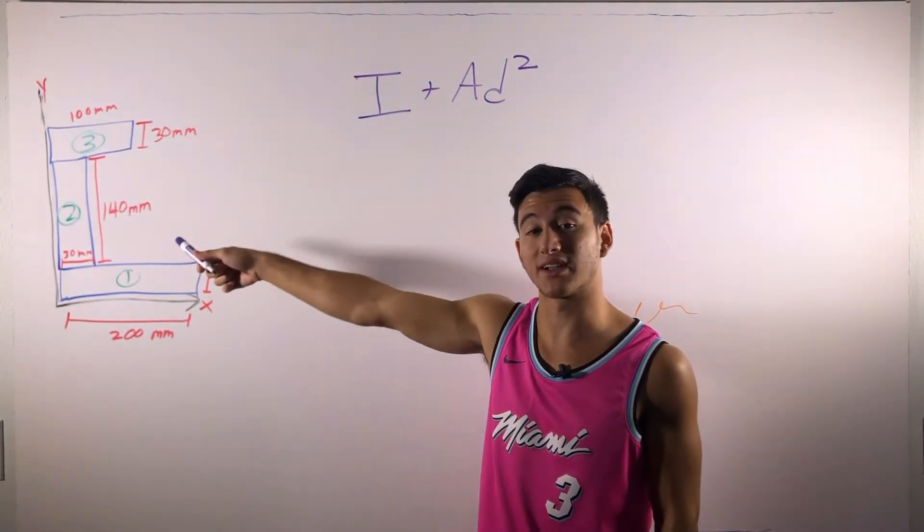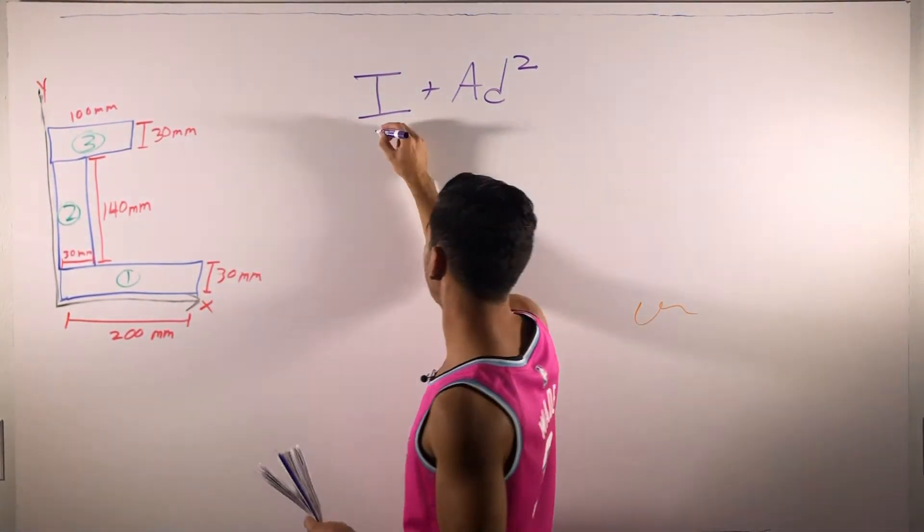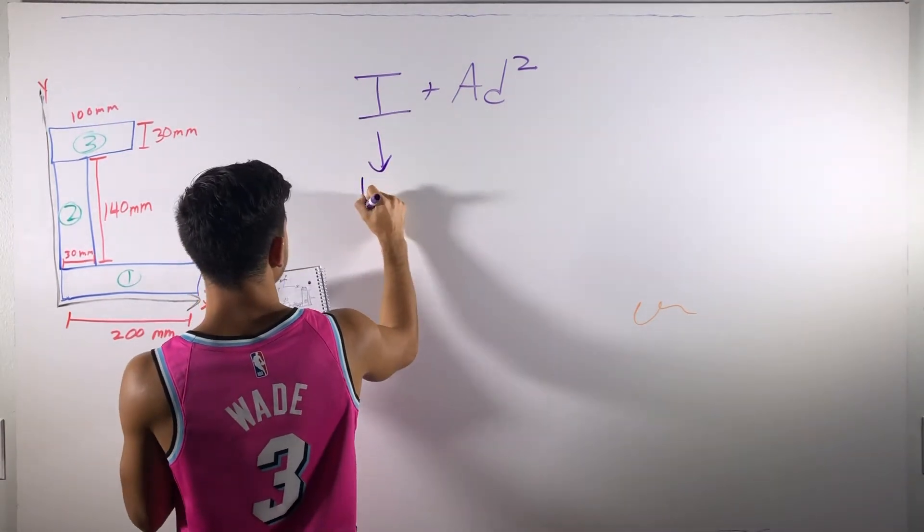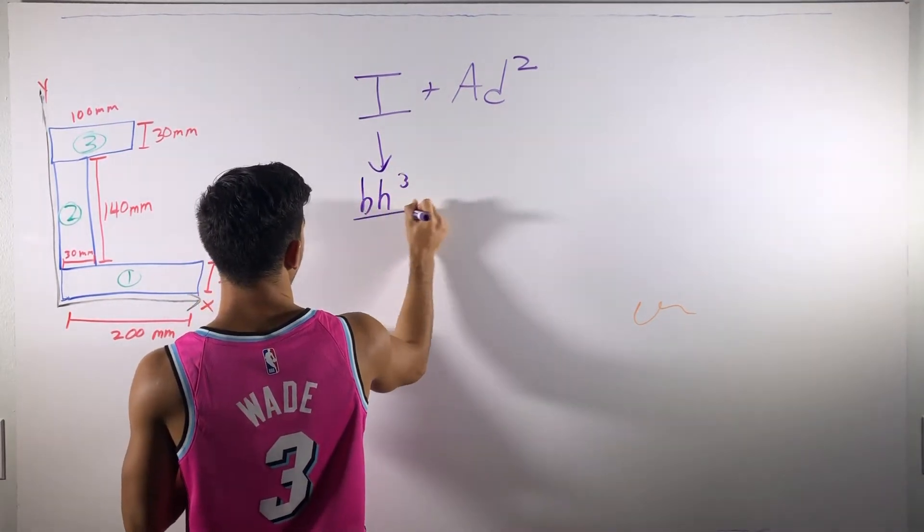But for now, today we're just working with rectangles on this problem. So, in terms of rectangles, the I is just going to be BH cubed over 12.